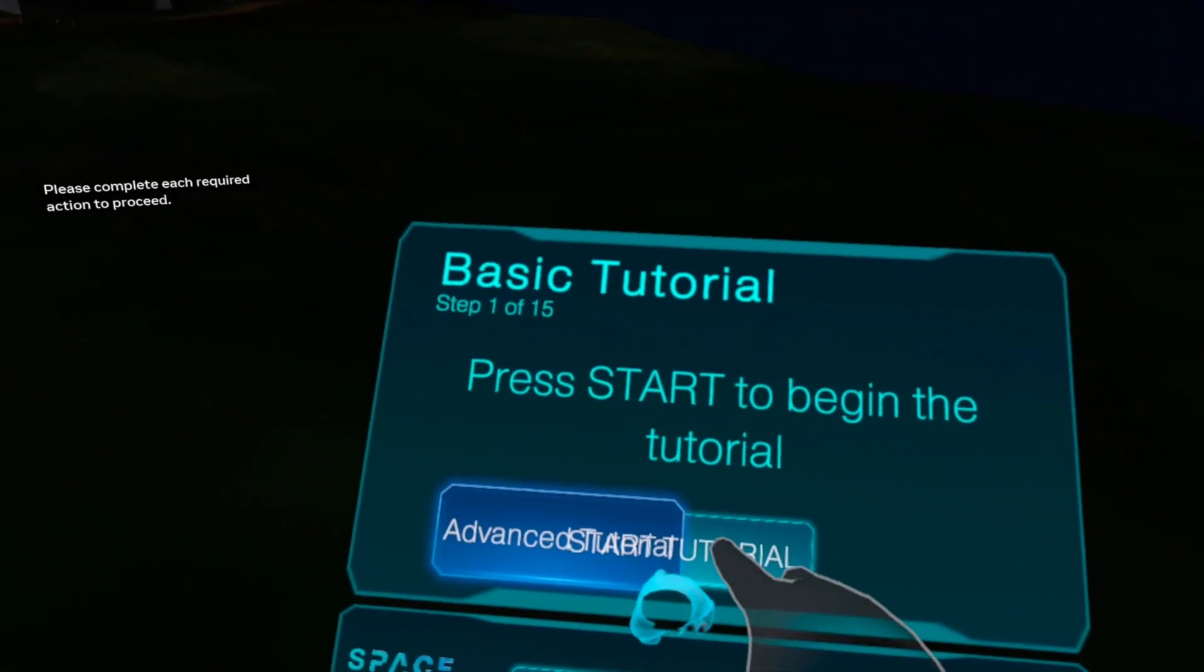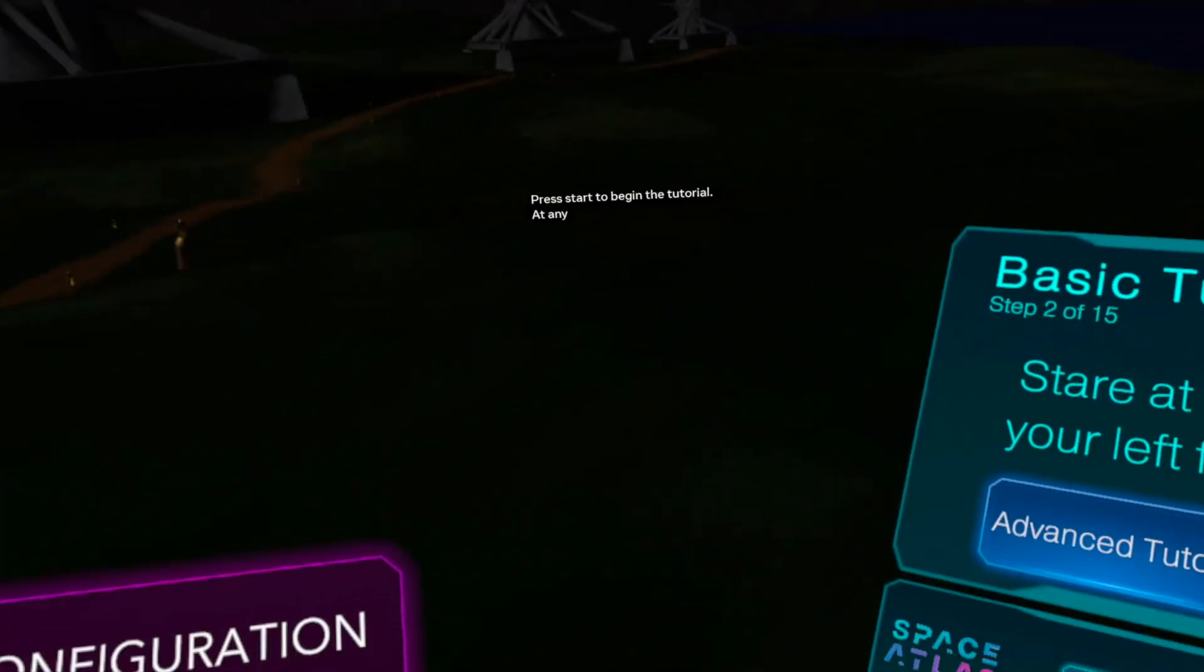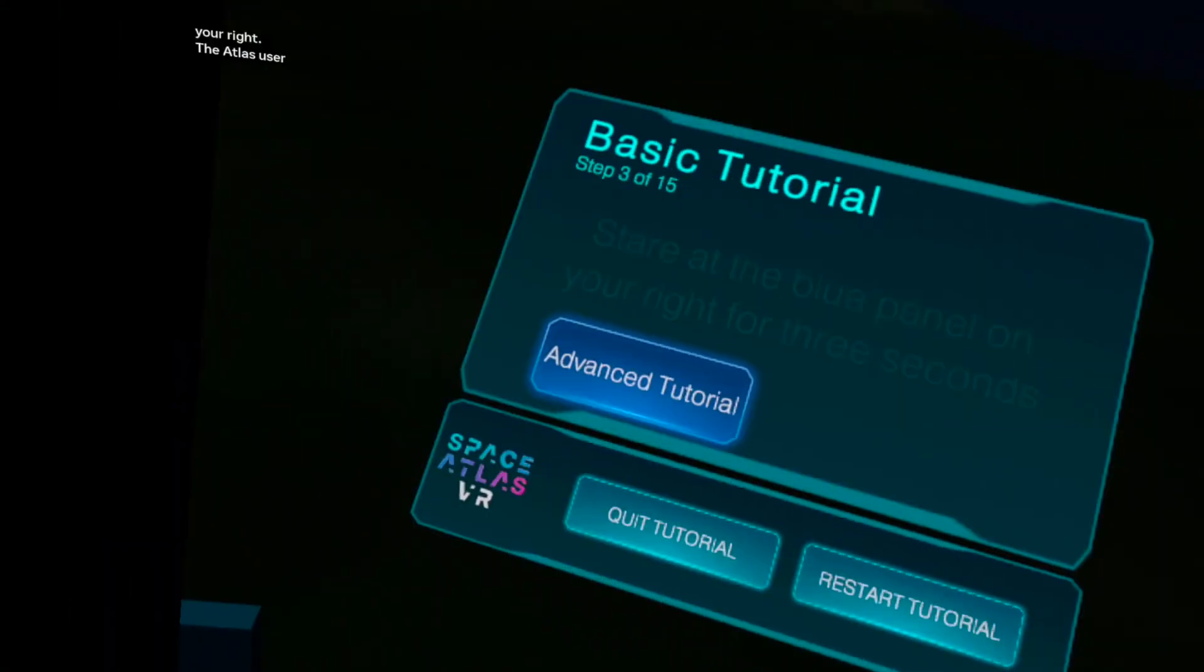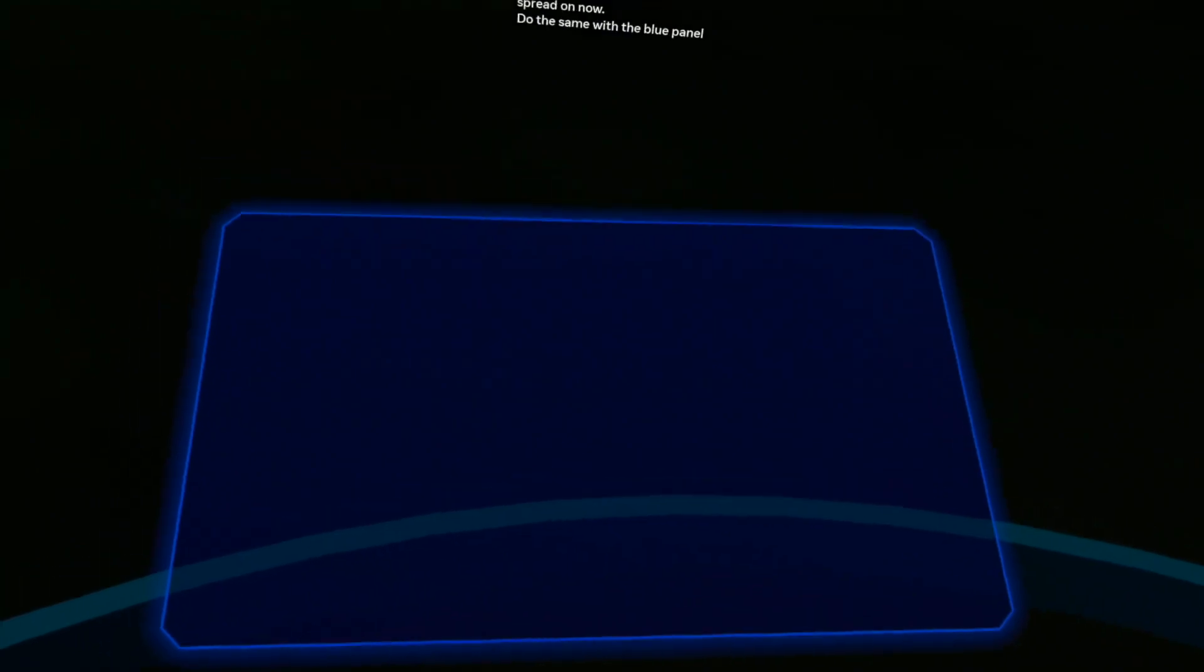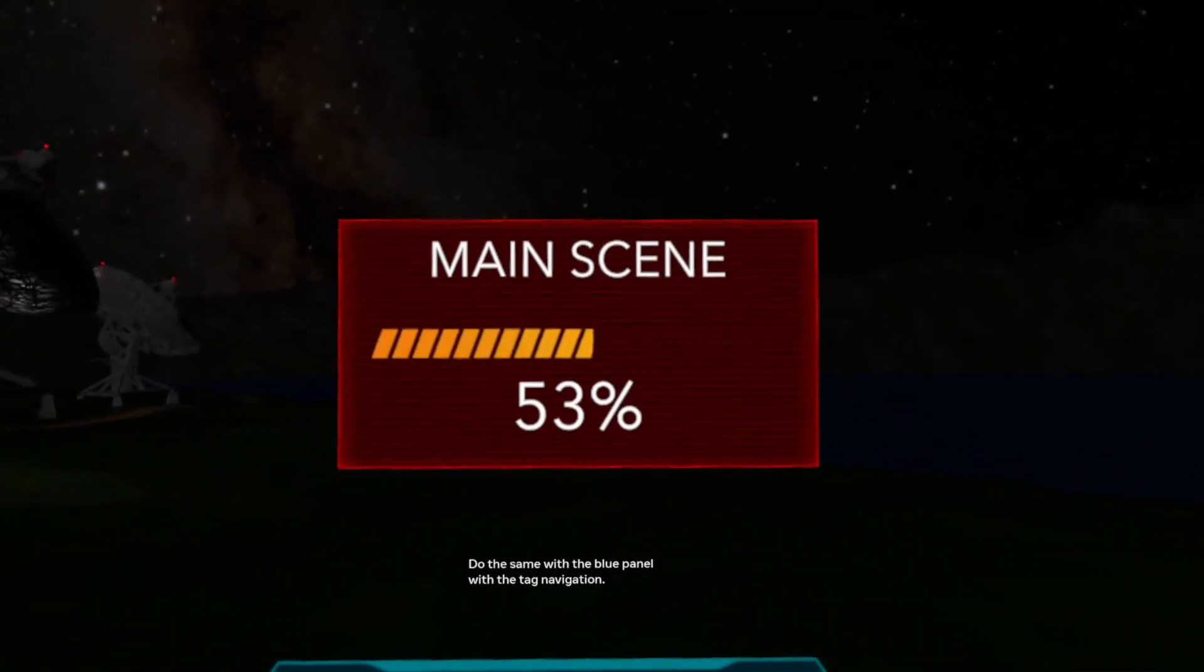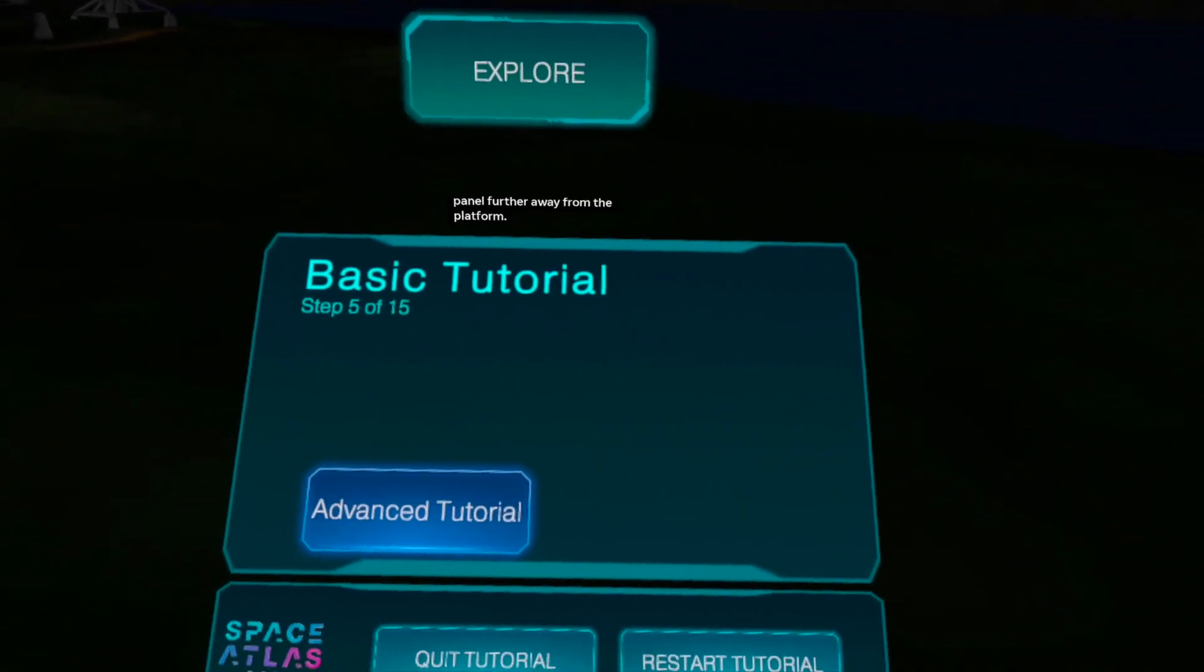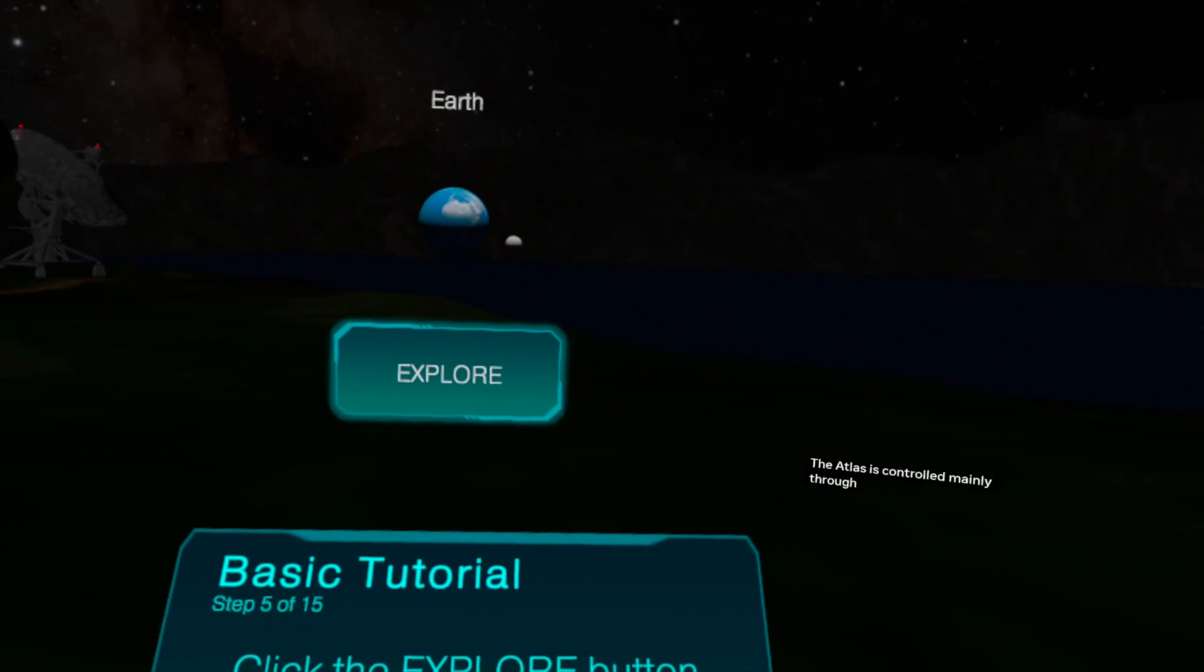The interface is designed to be hand-controlled. Please complete each required action to proceed. Press start to begin the tutorial at any time. Look to your left and to your right. The Atlas user interface is spread on both sides. Now do the same with the blue panel with the tag navigation.